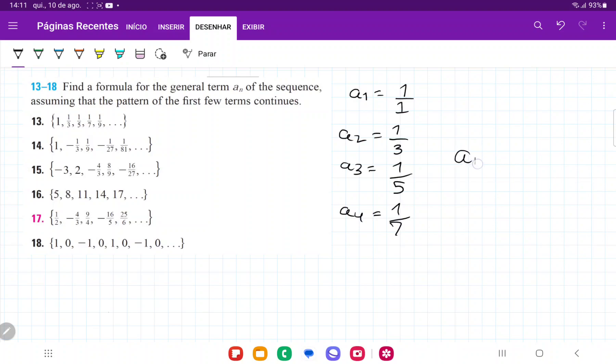And so we can see that an is going to be a fraction. And we can see that this fraction increases in the odd numbers in the denominator.